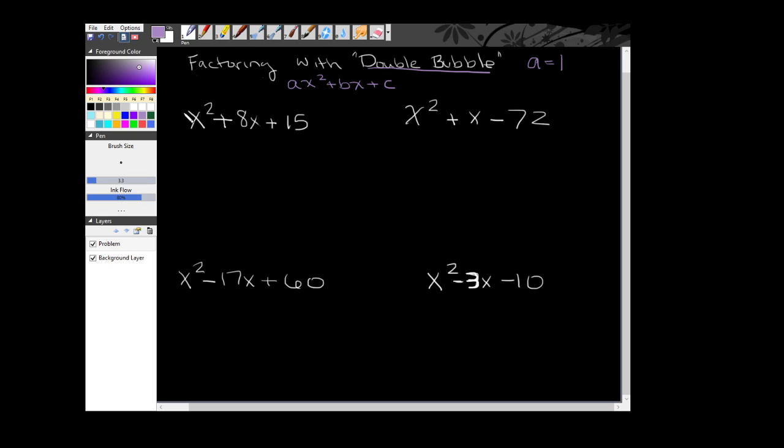Now remember, a lot of times in algebra we don't actually write the 1 in there, so there's an imaginary 1 floating in front of all of these x squareds. Now another important thing is if you see this in an equation, meaning that there's an equal sign, we usually want that equation to be equal to 0. So just double check and make sure that all of our stuff has an equation equal to 0, or is just an expression like you see here.